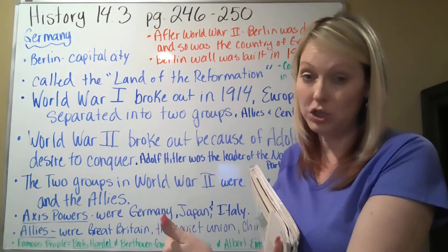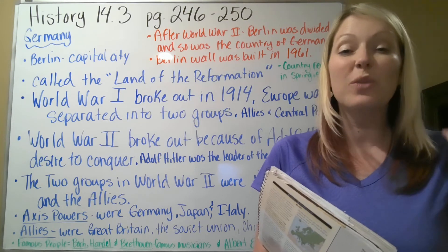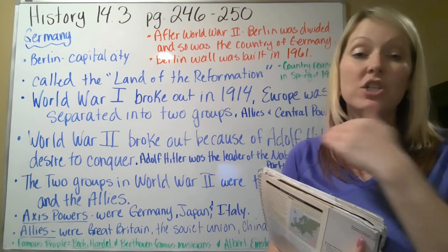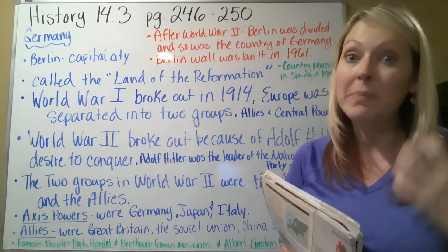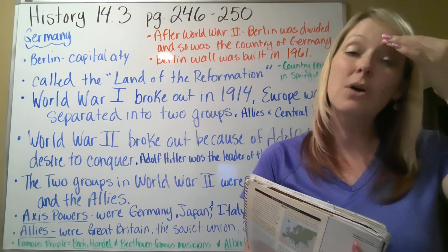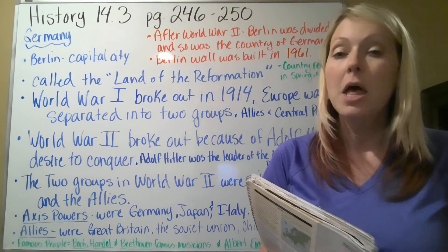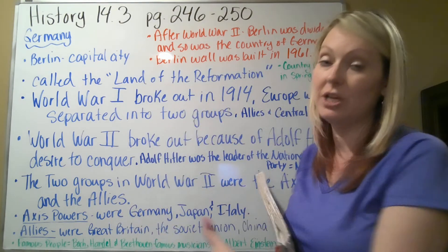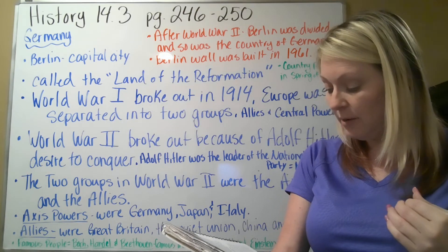People started trying to flee from East Germany into West Germany, and the communists didn't like that. So they built the Berlin Wall in 1961, which split the country to prevent people from crossing over to West Germany. It was actually called the Wall of Shame, because they were shaming people for wanting to go to a free nation instead of a communist one.